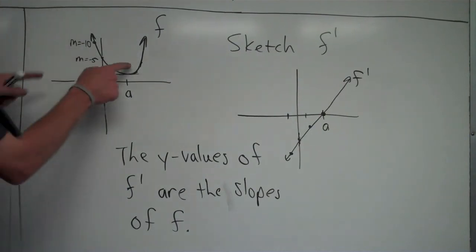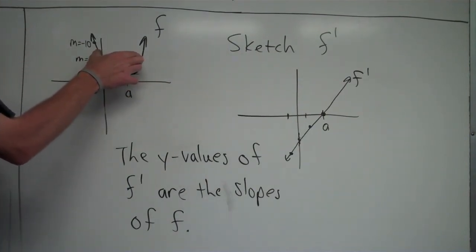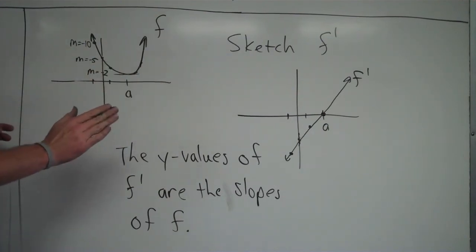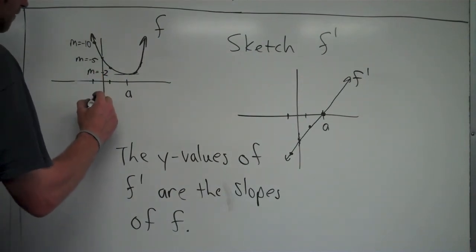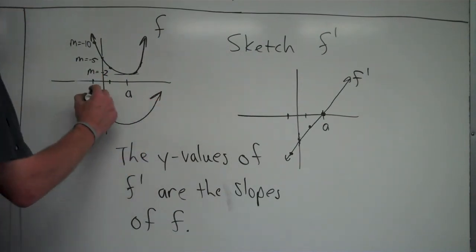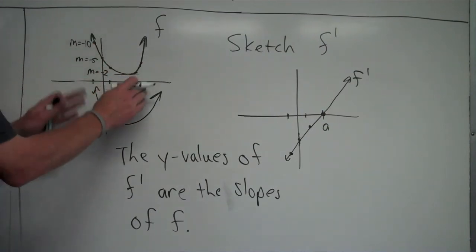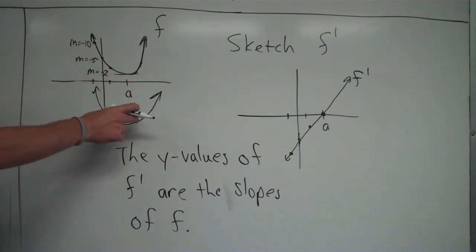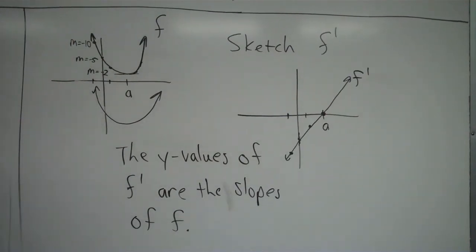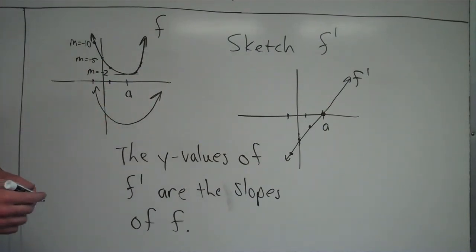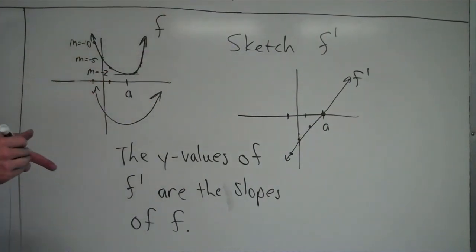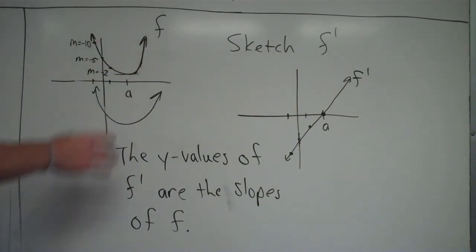One more point: if I were to shift this graph up or down without shifting it left or right, the derivative graph would not change. If I shifted the same graph down, say, 5 or 10 units, while the y-values of the graph would have changed, the slopes wouldn't have. At any particular x-value, the slopes of the graph would be the same. So the derivative graph only tells us about slopes, meaning it would be the same regardless of whether the graph was shifted up or down.